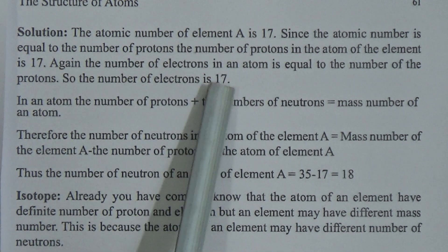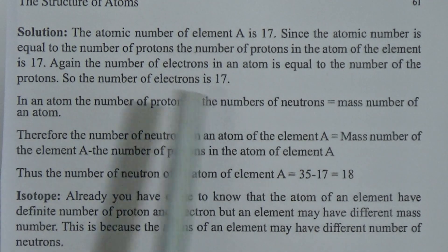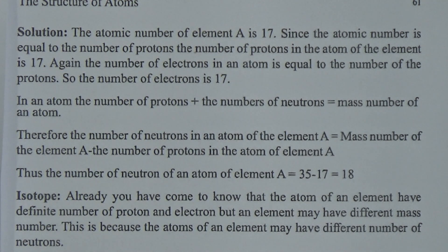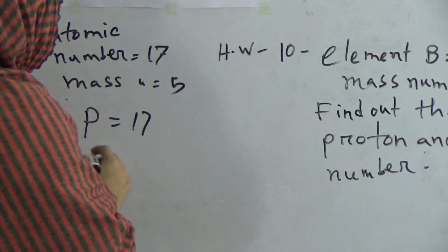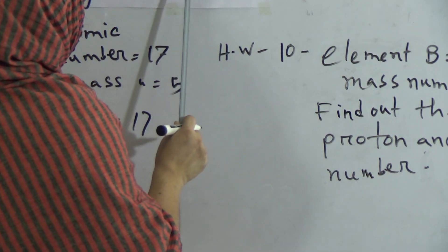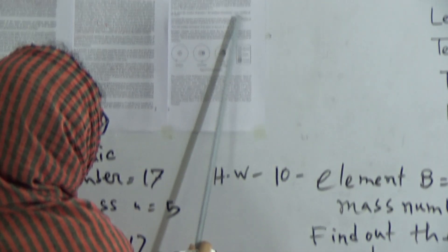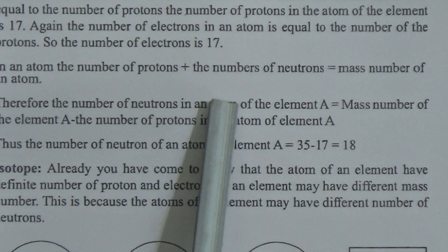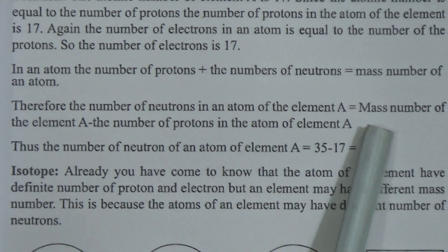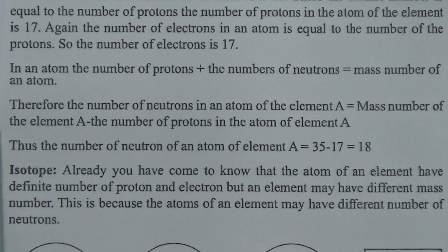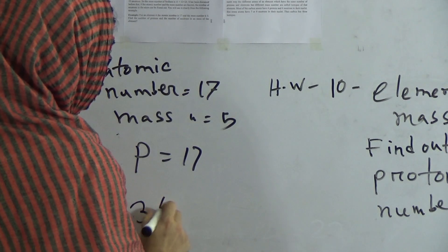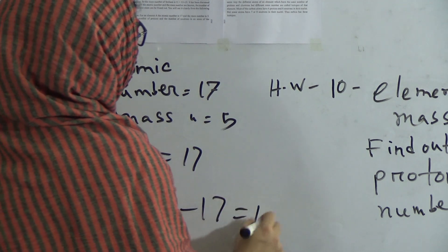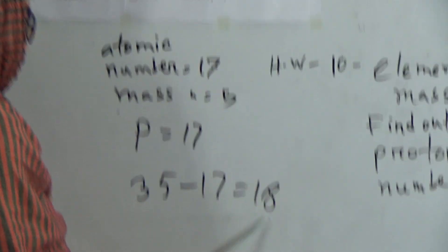The number of electrons in an atom equals the proton number, so the electron number is also 17. In an atom, the number of protons plus the number of neutrons equals the mass number. Therefore the number of neutrons of element A equals the mass number minus the number of protons. The mass number is 35, so 35 minus 17 equals 18. The neutron number of that element is 18.